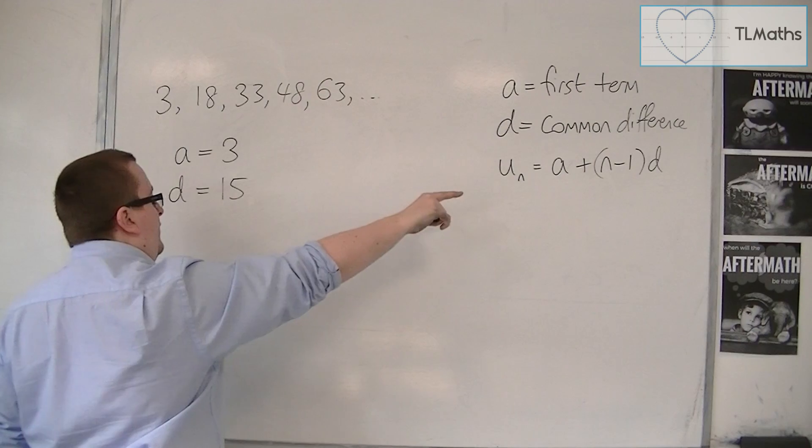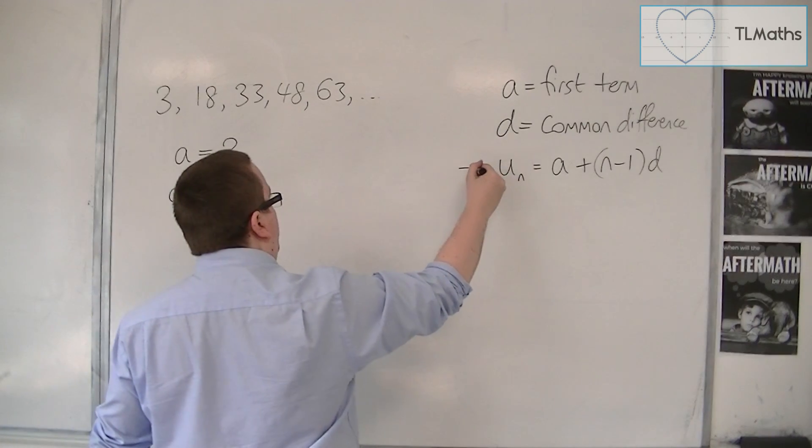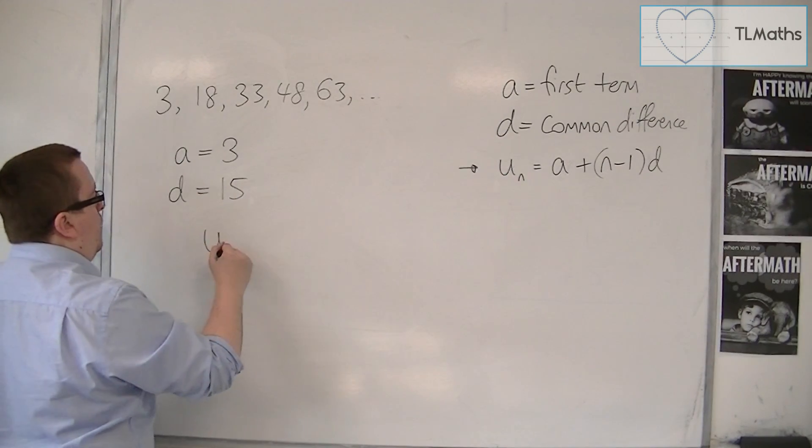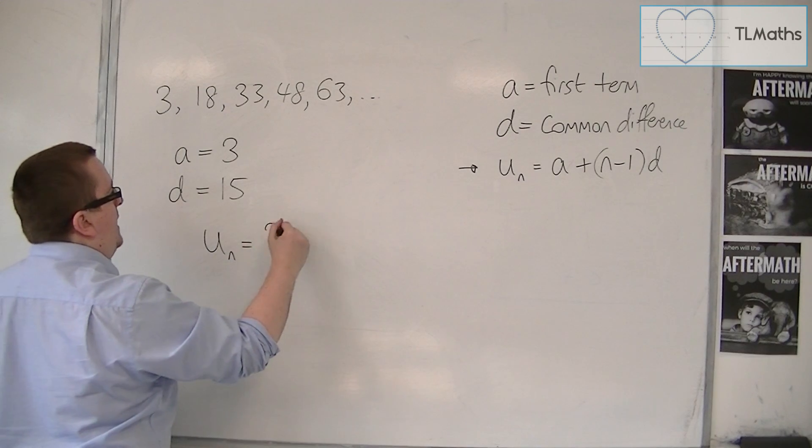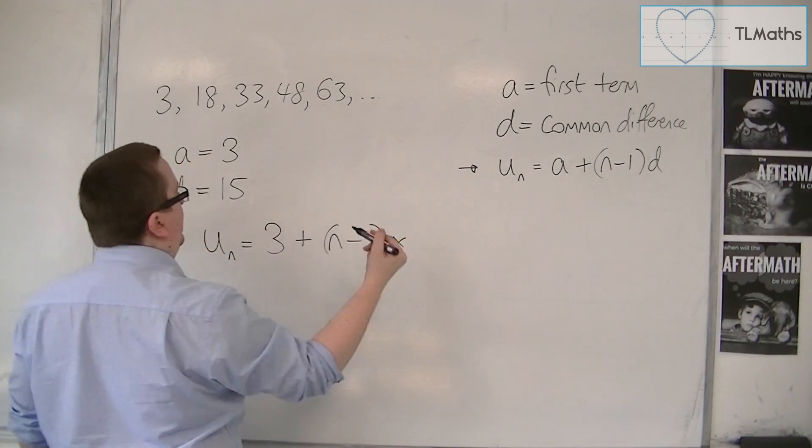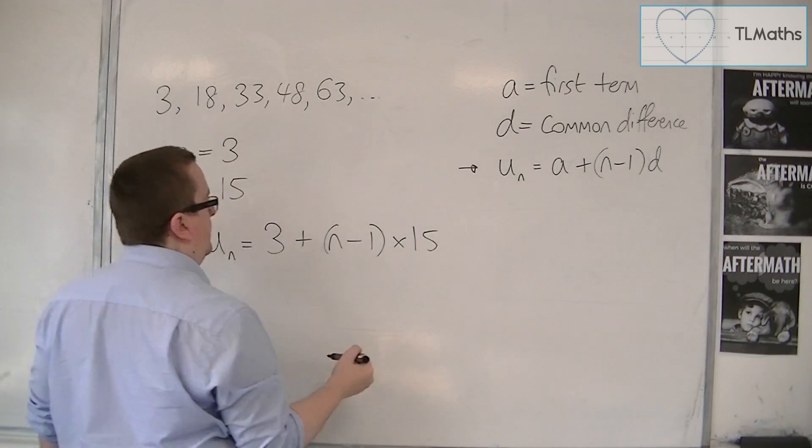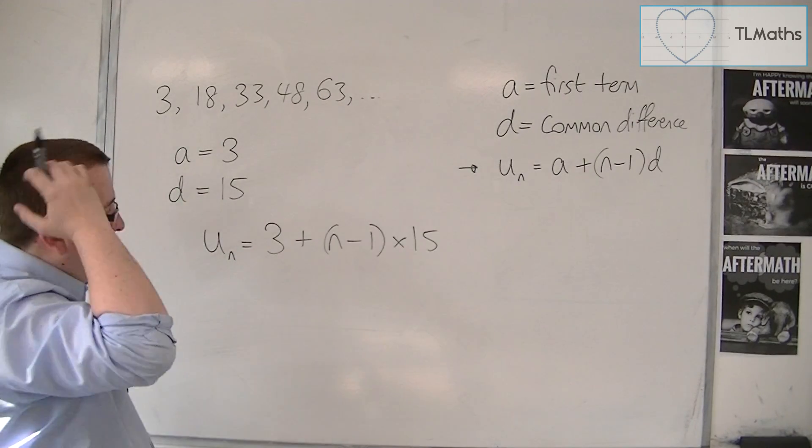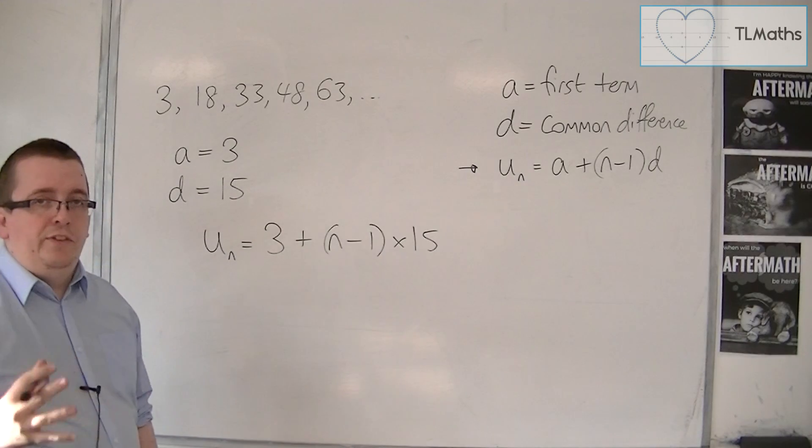So the nth term is given to me by this formula that's in the formula booklet. So un is equal to A plus n minus 1 times D, so 15. Now that is the nth term.